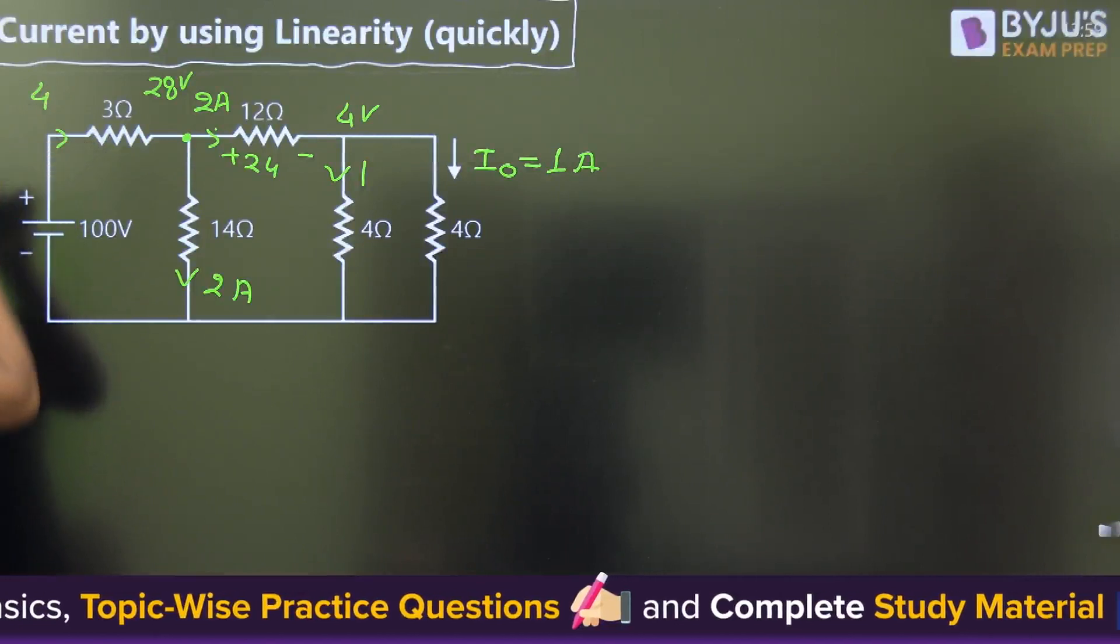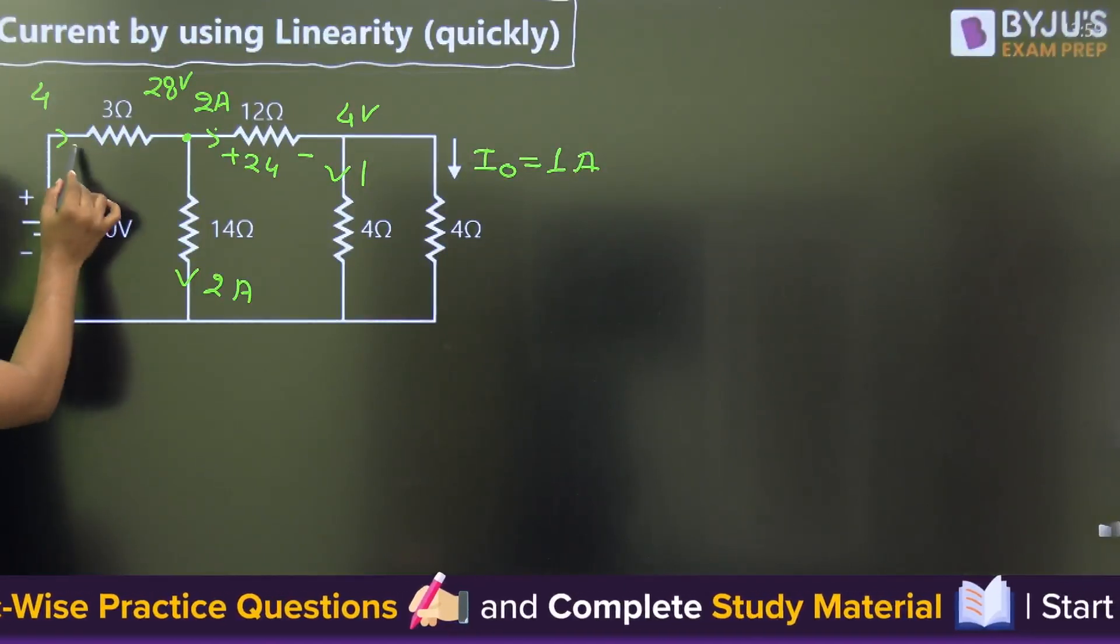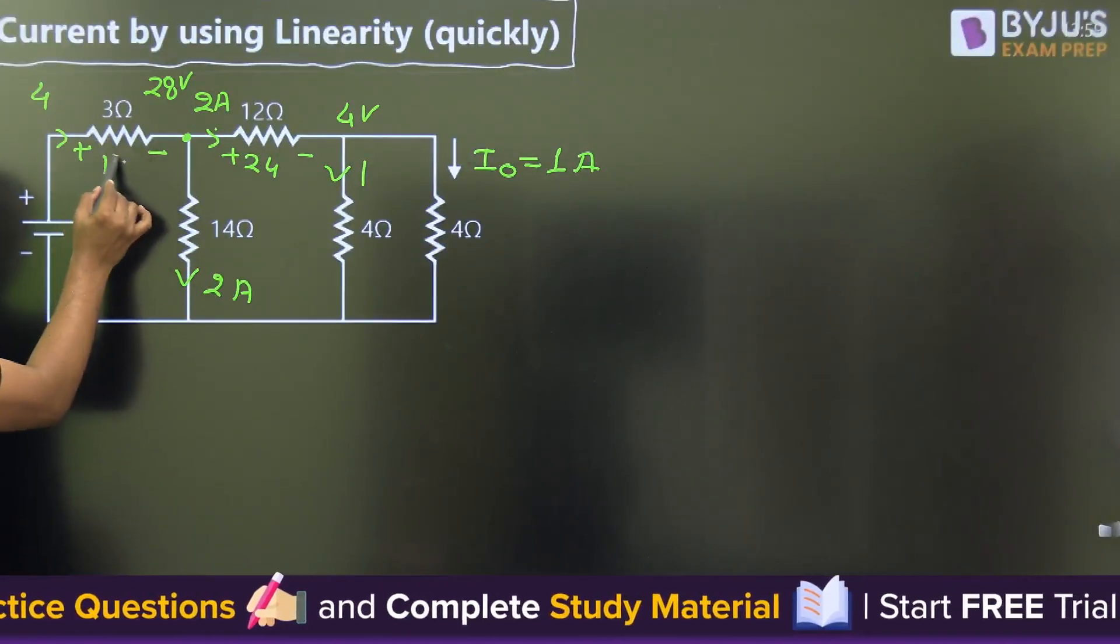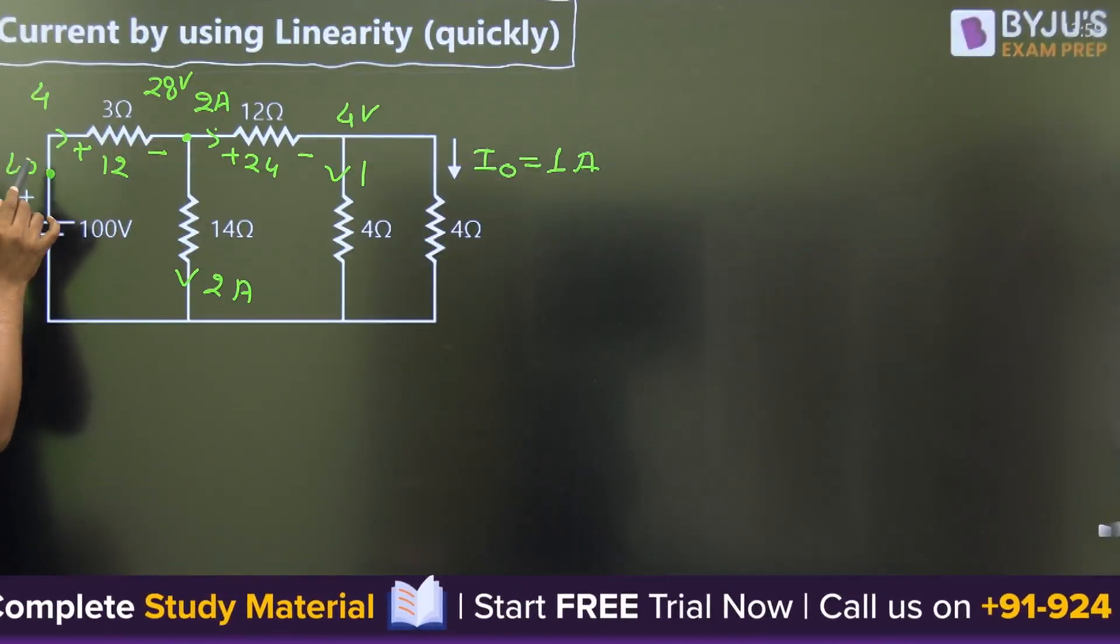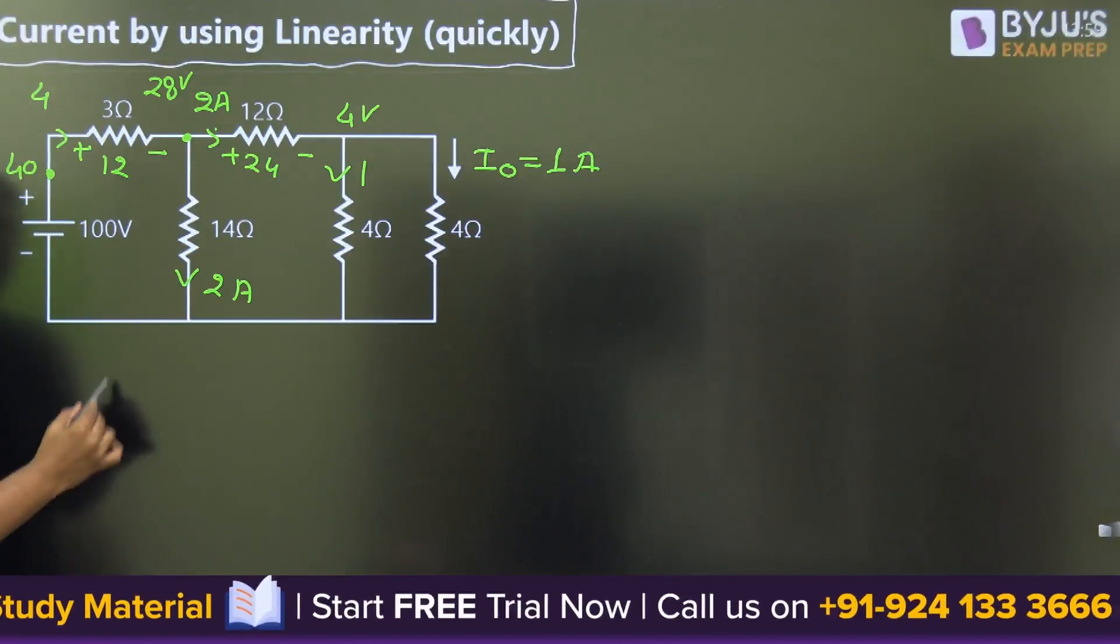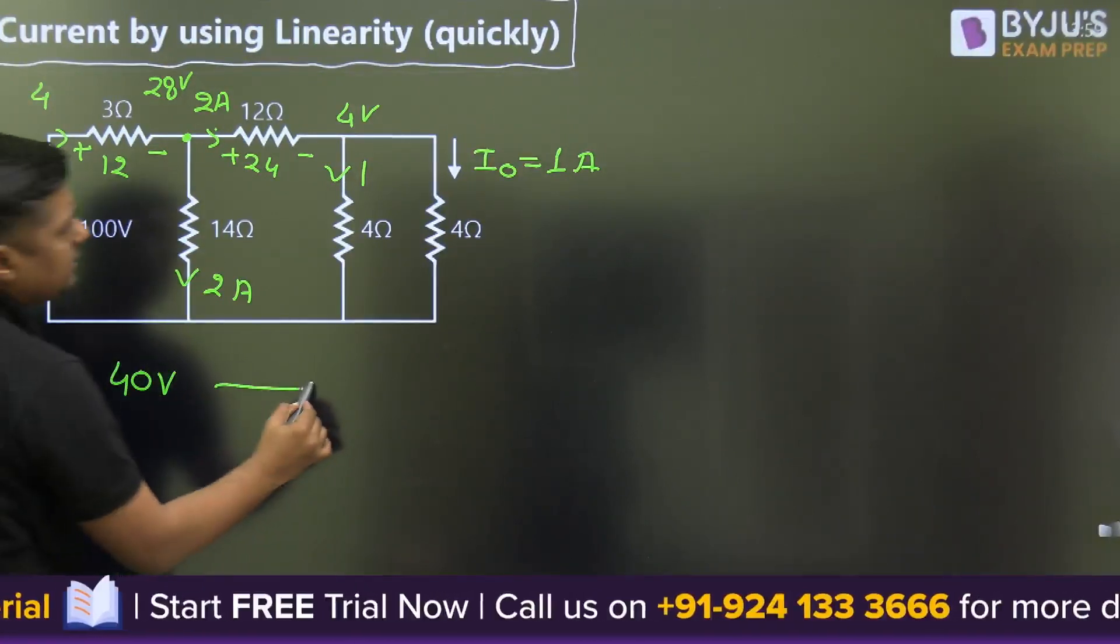2 plus 2, the voltage here is 4. Current is 4 amperes. 4 times 3 is 12 volts. 12 plus 28 equals 40. If the voltage at this point is 40 volts, the current is 1 ampere.